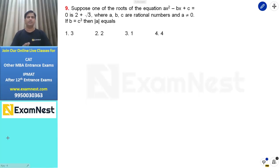Hello everyone. This is an easy to moderate level question. Suppose one of the roots of the equation ax² - bx + c = 0 is 2 + √3.